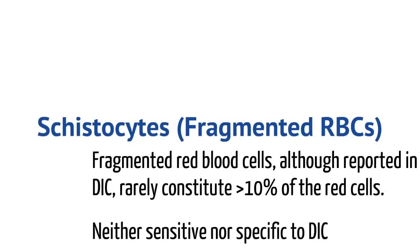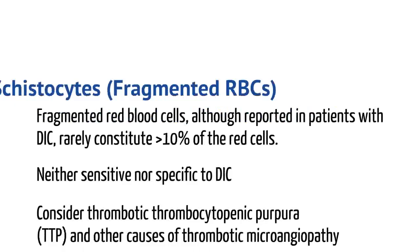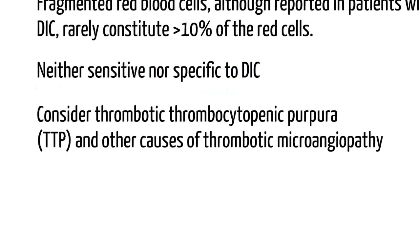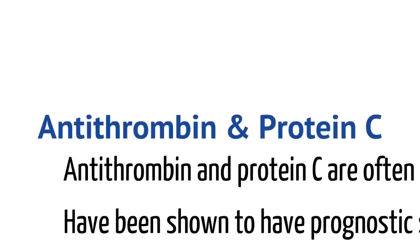Let's talk about schistocytes, which are fragmented RBCs. Fragmented RBCs are reported in patients with DIC, but usually they are only about 10% at most of red blood cells. It's not a sensitive or specific finding of DIC because schistocytes are associated with many other disorders, including mechanical heart valves and vasculitides. When you see schistocytes, consider other things that could be causing it, such as thrombotic thrombocytopenia purpura or other microangiopathies.